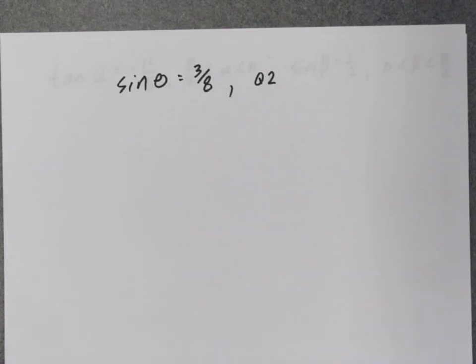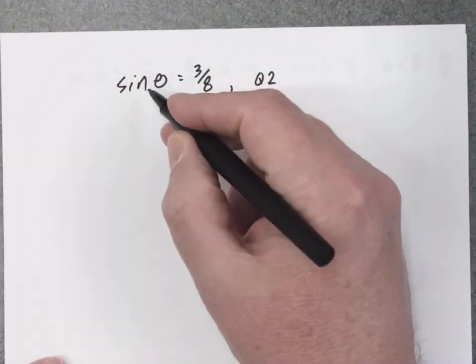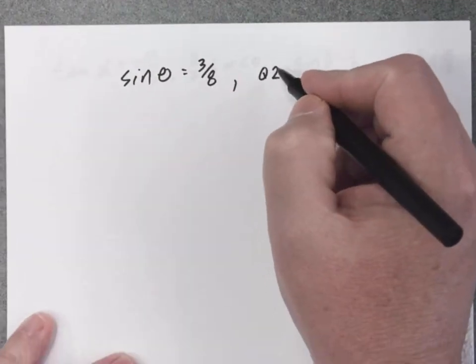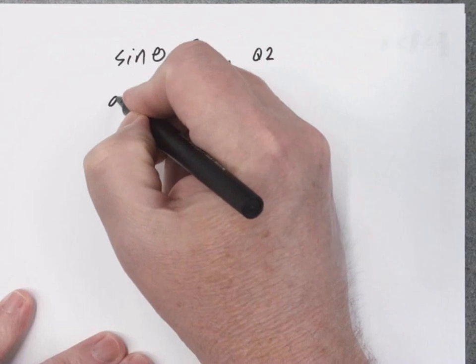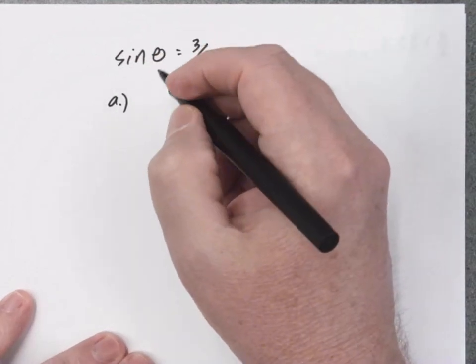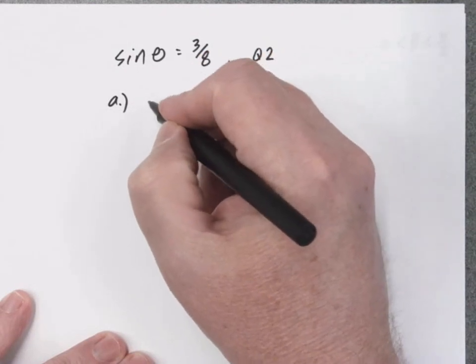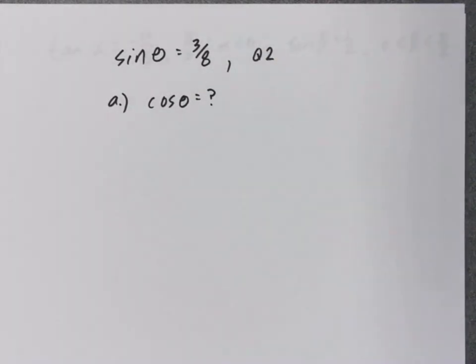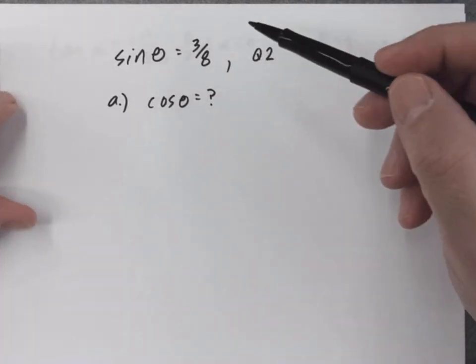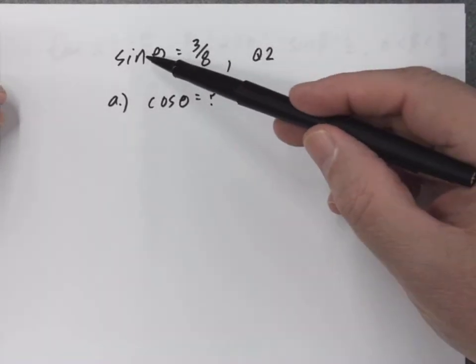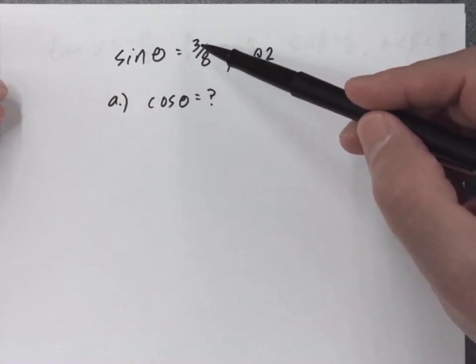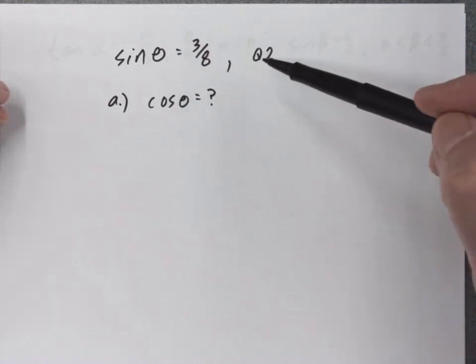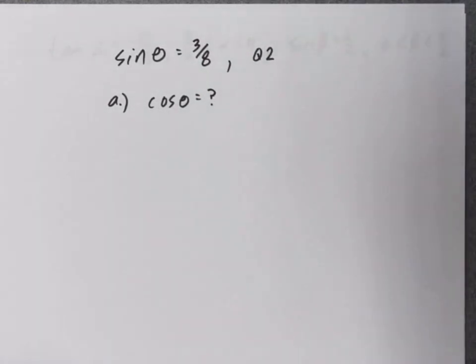I did go ahead and write down the information. We were told the sine of theta is three eighths and it's in quadrant two. For part A, this is the kind of problem we did a while ago. What I like to do is take this initial trig function and go create a right triangle based upon this information. Once I do that, I should be able to figure out the cosine.